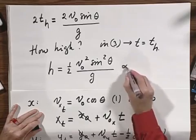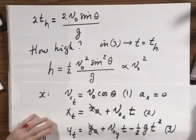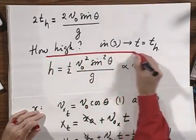And that is proportional to v zero squared. Let's also put this in a nice red frame.